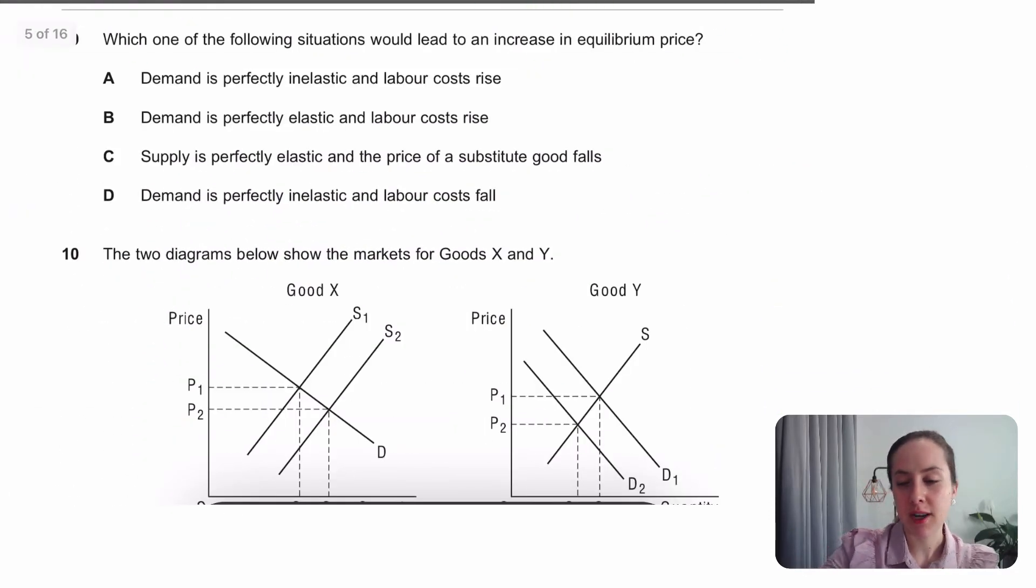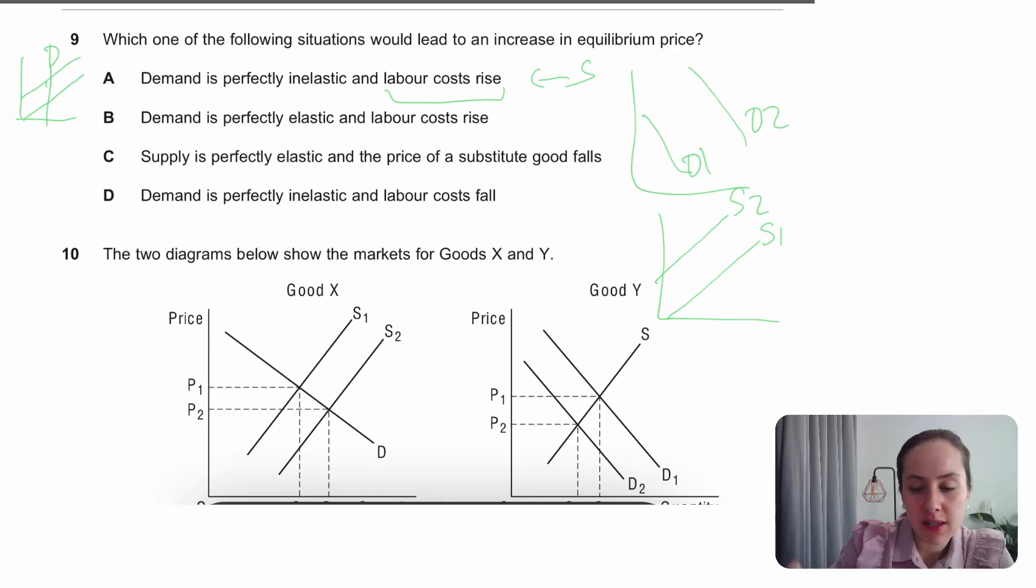An increase in equilibrium price, we're looking for an increase in D1 to D2, or a shift of supply from S1 to S2. But they're messing with the elasticity here, so that's a classic. If demand is perfectly inelastic, what does that look like? So that will look like this. If labour costs rise, this is going to shift your supply to the left. And if you shift supply to the left, you're going to lead to a higher price. P1 goes from P1 to P2. So we got lucky, A is the answer.